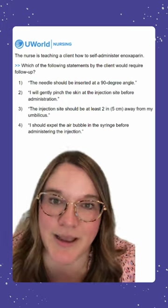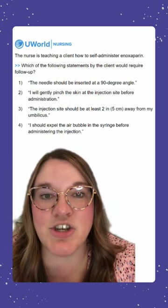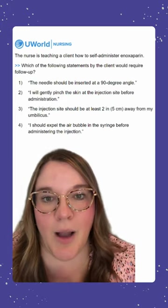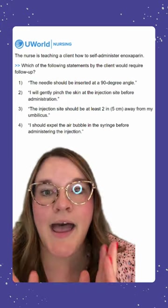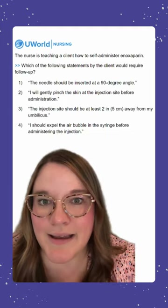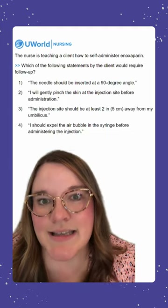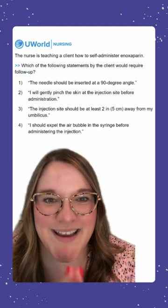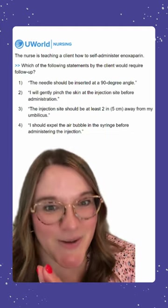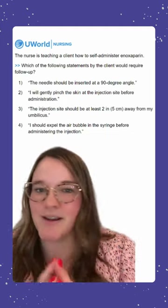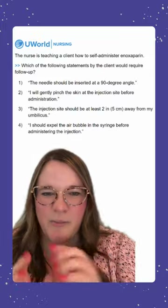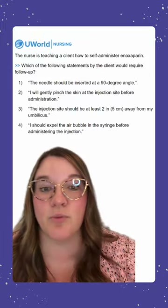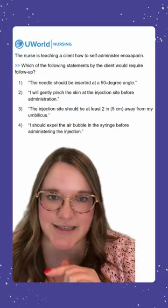Option three says the injection site should be at least two inches away from my umbilicus. This is also an incorrect option because it is true — we don't want to go directly around the belly button, we want it a little farther out, and we definitely want to rotate injection sites.